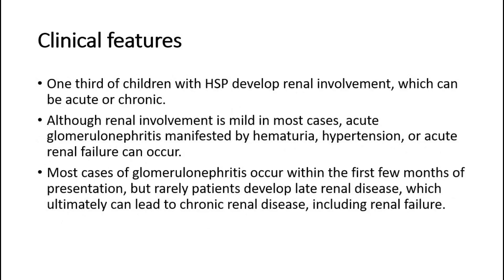One-third of children with HSP develop renal involvement, which can be acute or chronic. Although renal involvement is mild in most cases, acute glomerulonephritis manifested by hematuria, hypertension, or acute renal failure can occur. Most cases of glomerulonephritis occur within the first few months of presentation, but rarely patients develop late renal disease, which ultimately can lead to chronic renal disease, including renal failure.